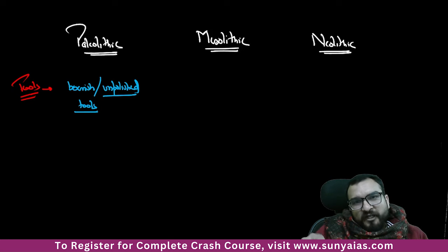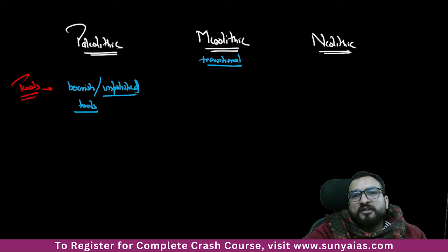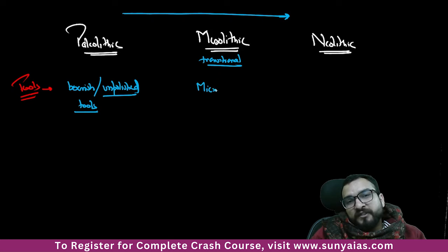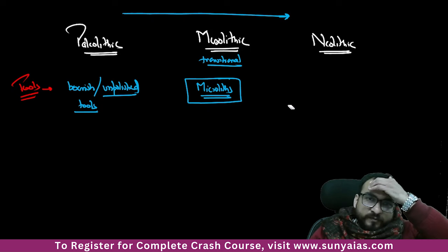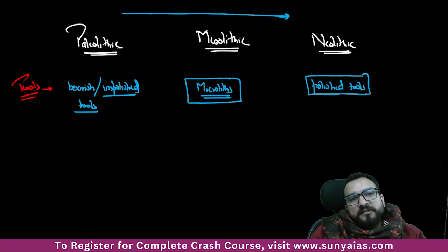Mesolithic is a transitional phase — some features of Paleolithic remain. The climate was getting warmer. The tools were crude and unpolished, but Mesolithic had one very special type of tool: Microliths — small micro tools found at Mesolithic sites. This was the peculiar feature of the Mesolithic period. In Neolithic times, we find polished tools — very well made for hunting and agriculture.